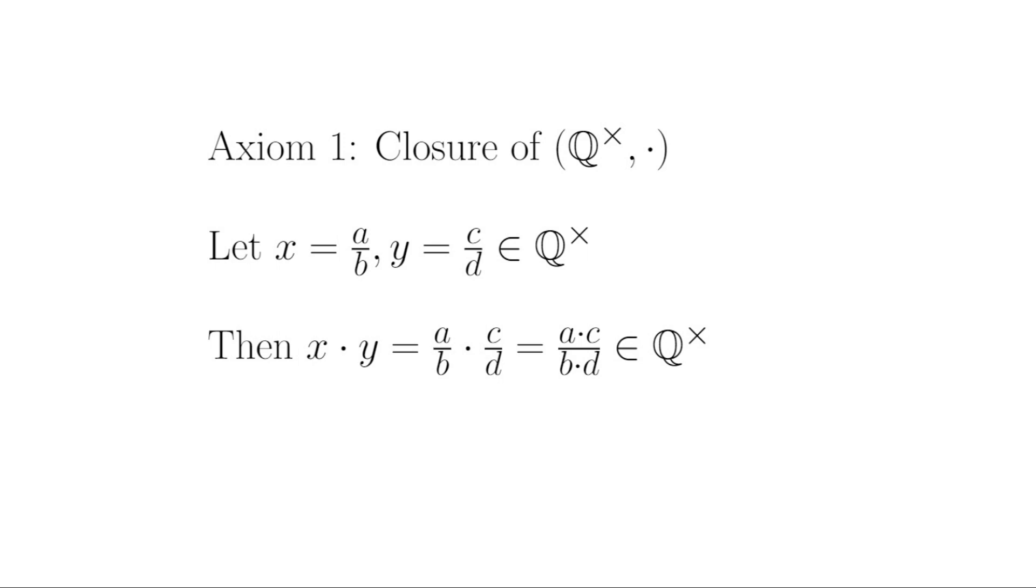So their product, ac, must also be non-zero. Also, since b and d are both non-zero by definition of rational number, I know that bd is also non-zero. Therefore, x times y can be expressed as the ratio of two non-zero integers. And so it's in our set Q×. So we do have closure.